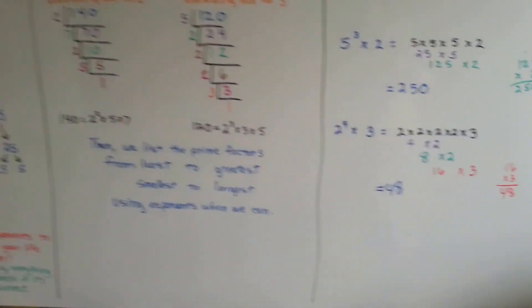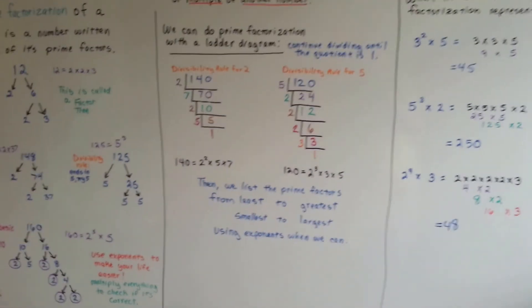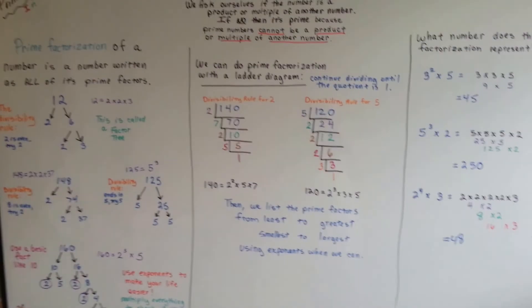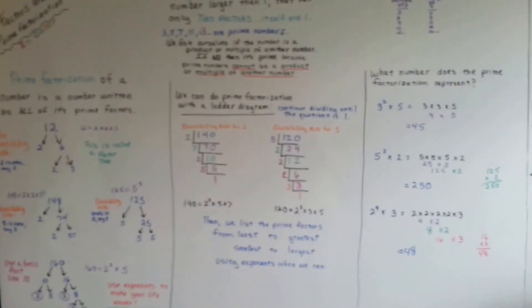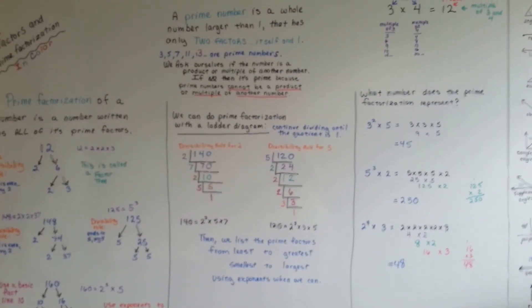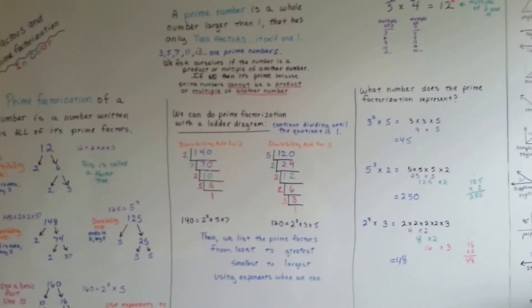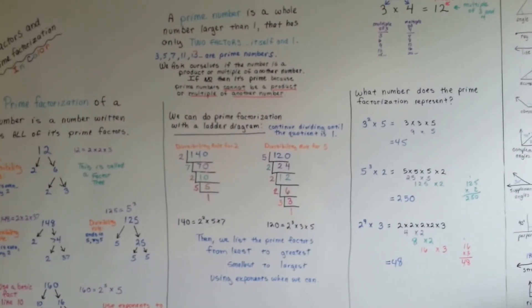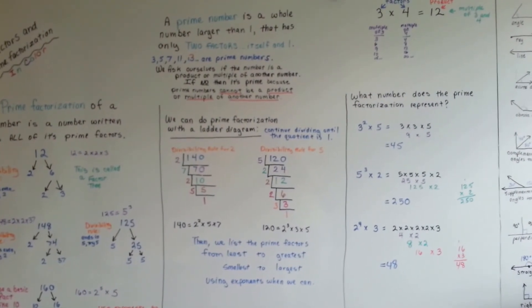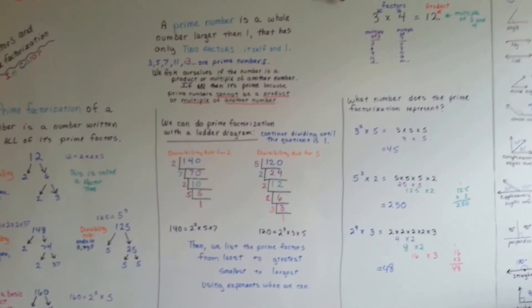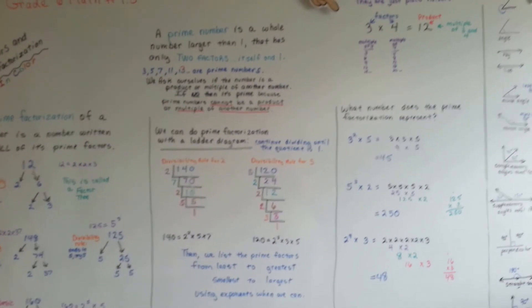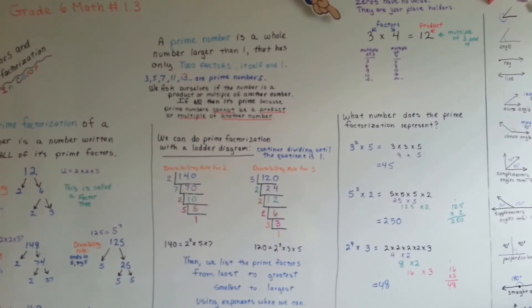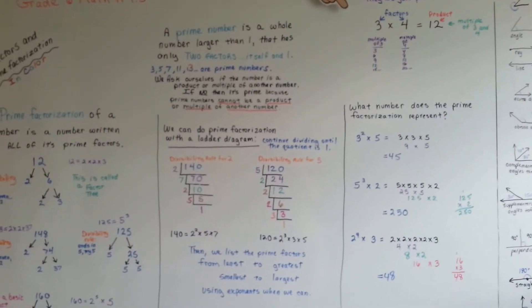So that is how we do prime factorization. I want you to remember that a prime number is a whole number that is larger than 1. If anyone asks you, is 1 a prime number? Say, no, of course not. A prime number is larger than 1. So 1 can't be a prime number. And remember that prime numbers have 2 factors, itself and 1, and that's it.